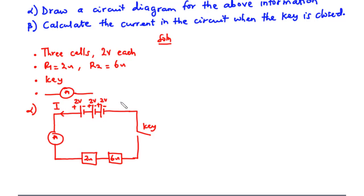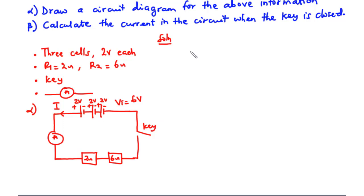Because the three cells are connected in series, we can find the total EMF: Vt equals the sum of the three cell values, so 2 plus 2 plus 2 equals 6 volts. So we have the total voltage to be 6 volts. This completes the circuit diagram for the information obtained above.